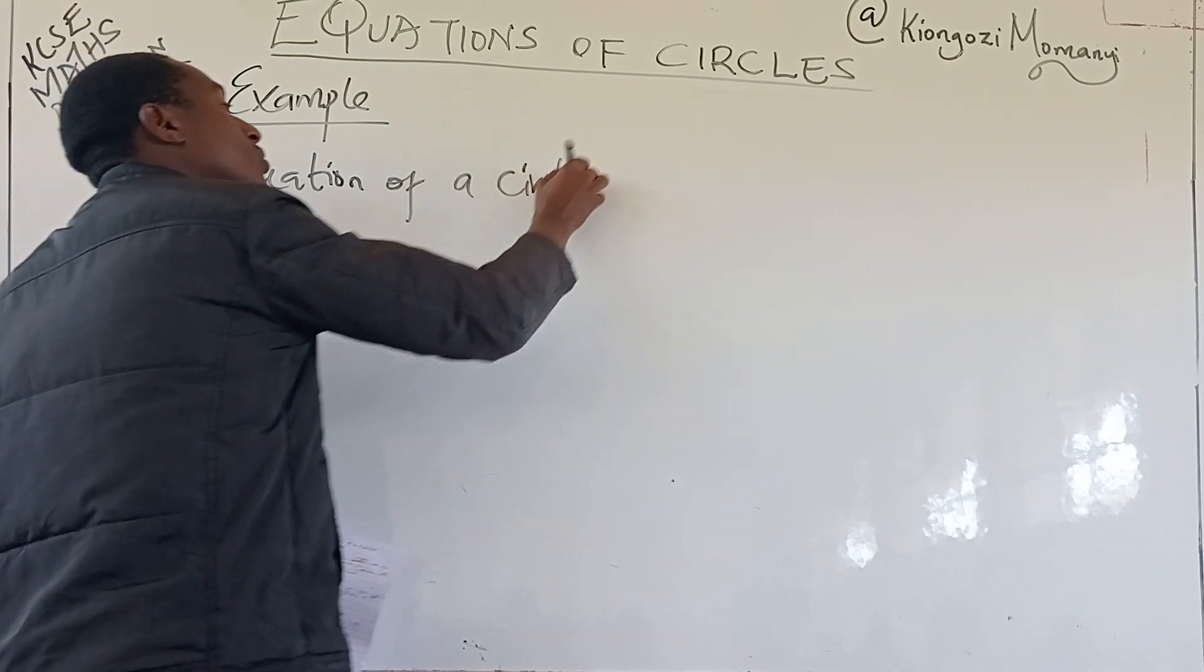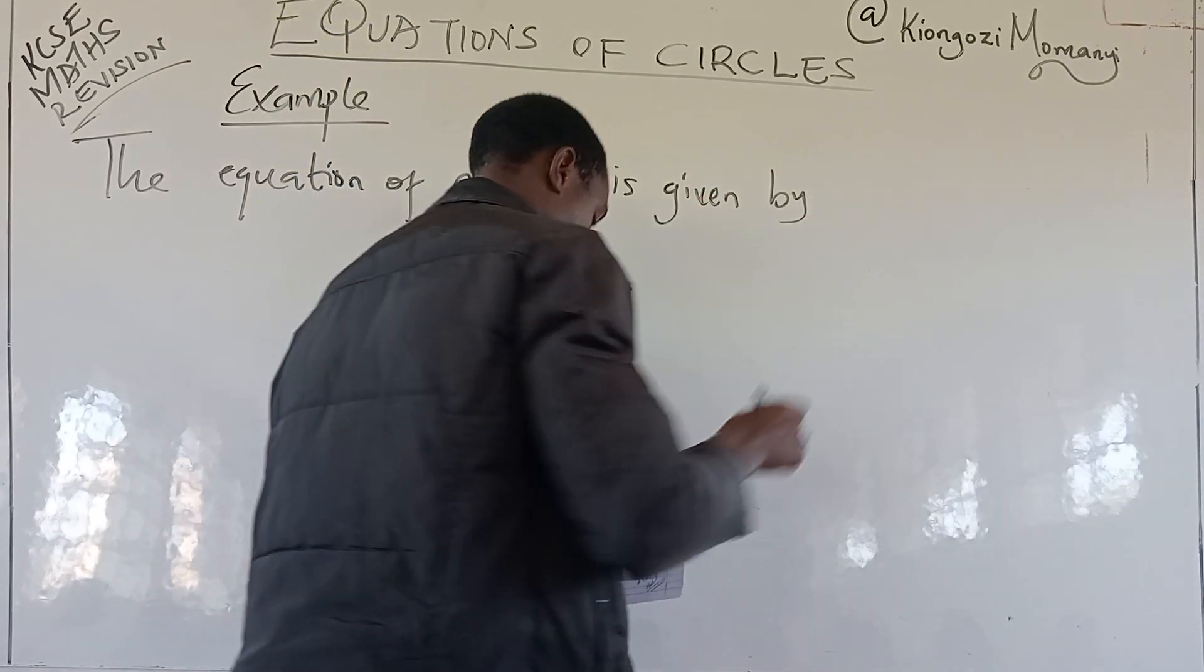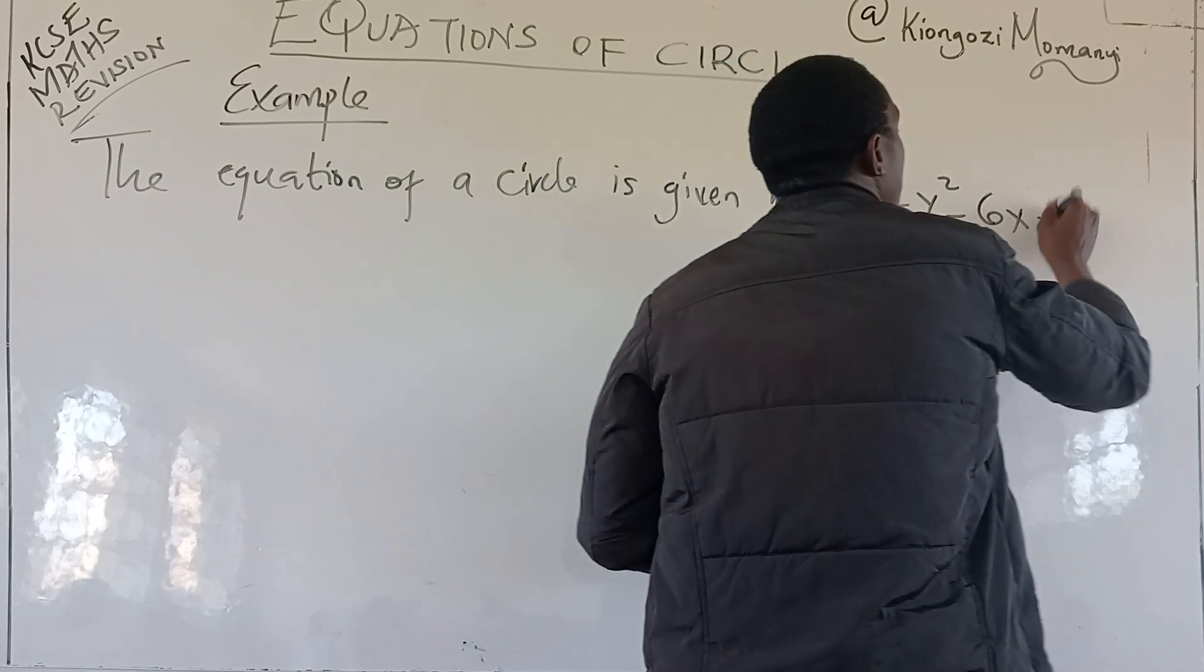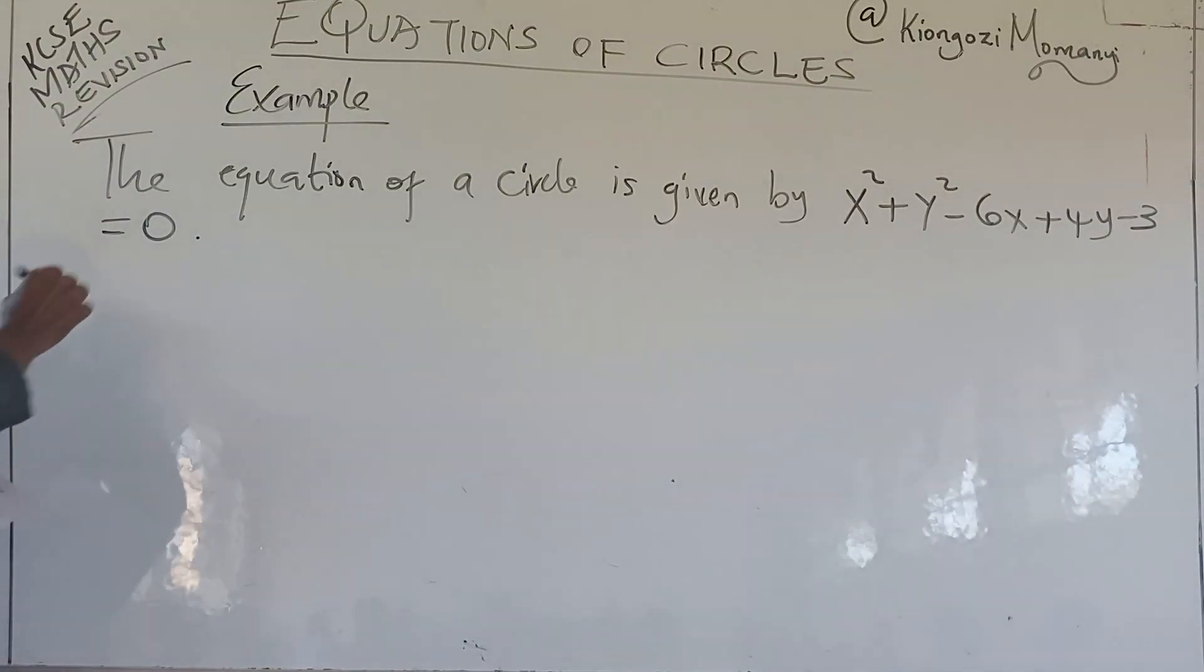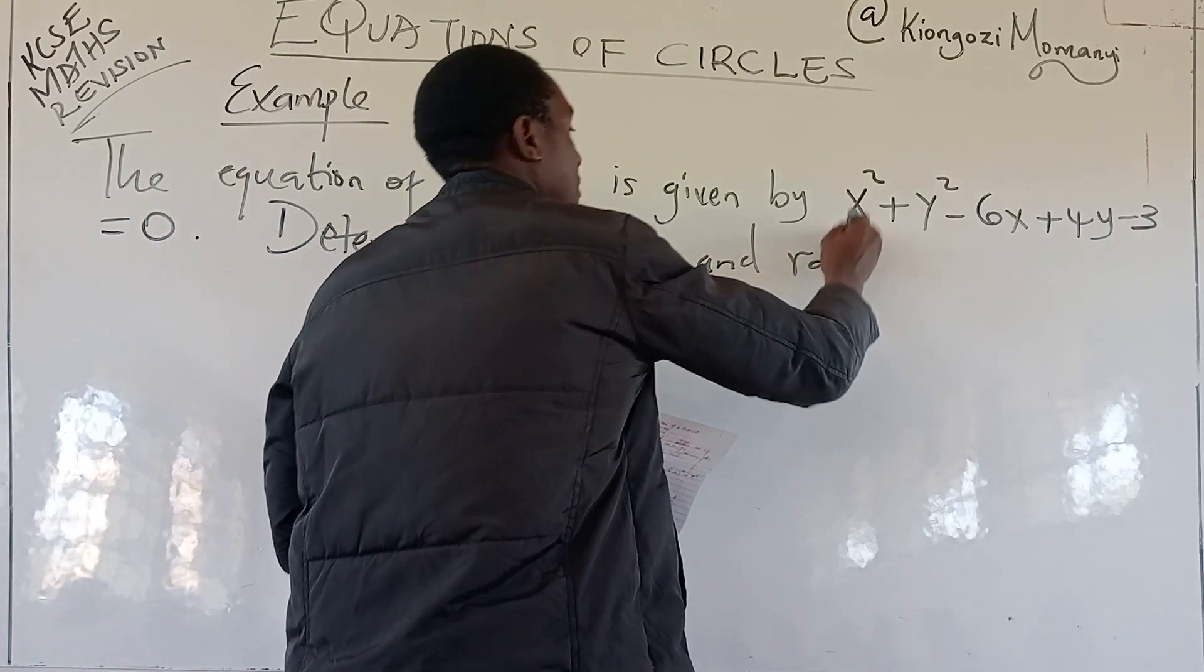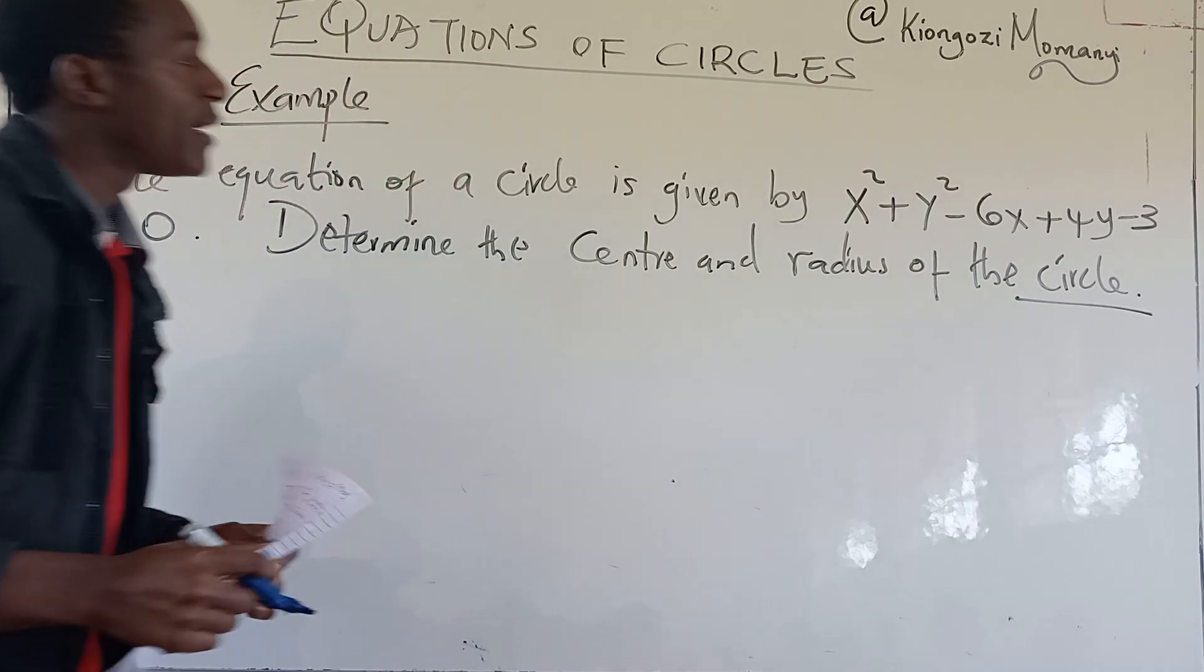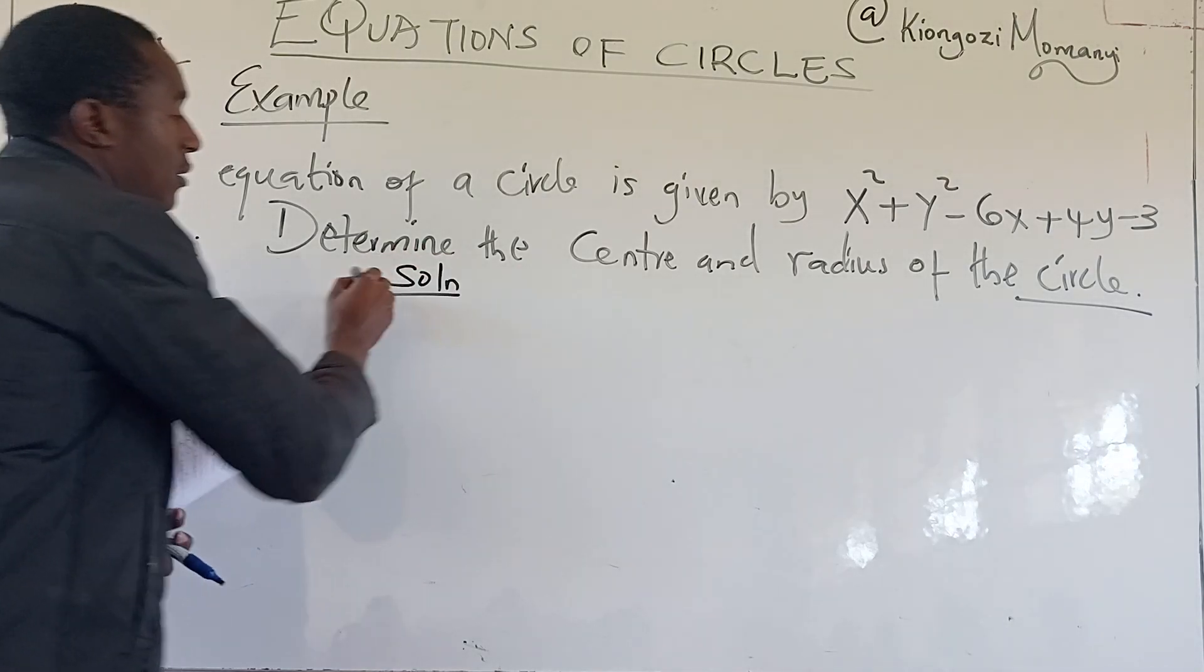The equation of a circle is given by x² + y² - 6x + 4y - 3 = 0. Determine the center and radius of the circle. Solution?